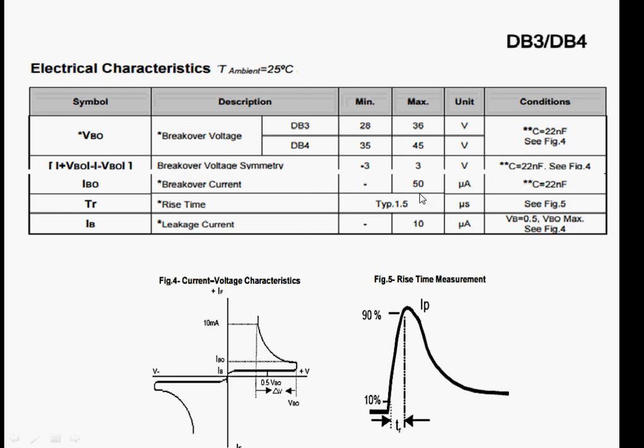And the break-over current IBO as shown here may be up to 50 micro-ampere. And then the leakage current, which is very small before breakdown, it may be 10 micro-ampere. And all the data is for especially when it is in a circuit and some capacitor is attached with the DIAC. The current 10% to 90%, for a typical DIAC, it may be 1.5 microseconds or so. So this is the characteristics of the DIAC.